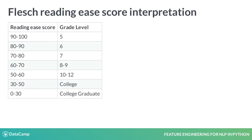This table shows how to interpret the Flesch Reading Ease scores. A score above 90 would imply that the text is comprehensible to a fifth grader, whereas a score below 30 would imply that the text can only be understood by college graduates.